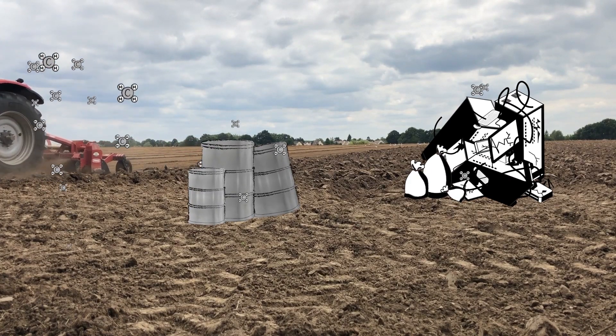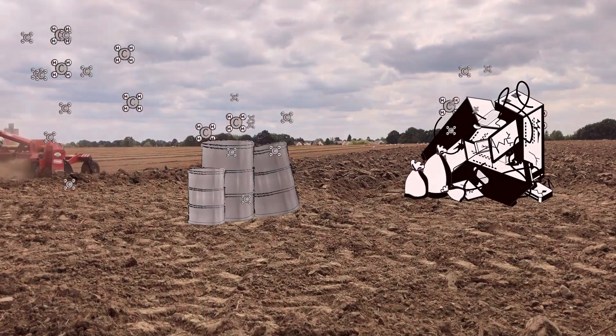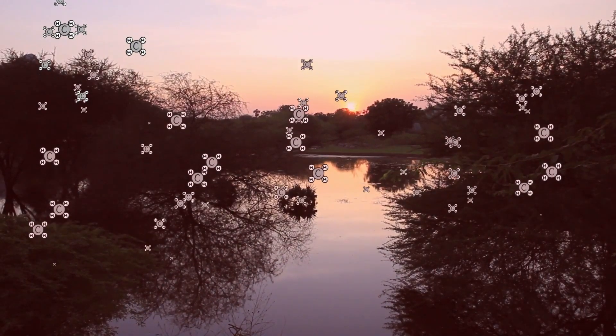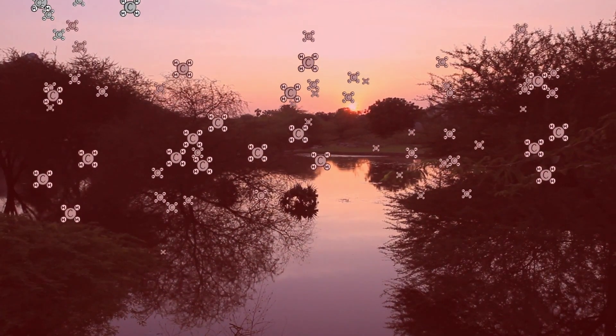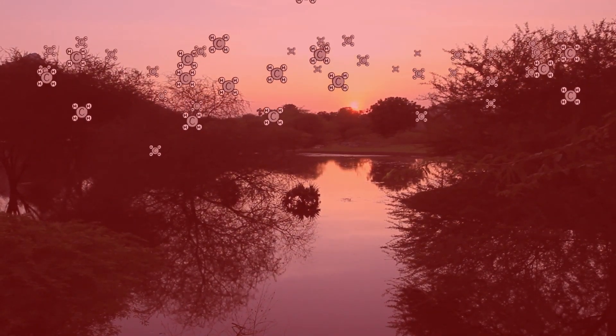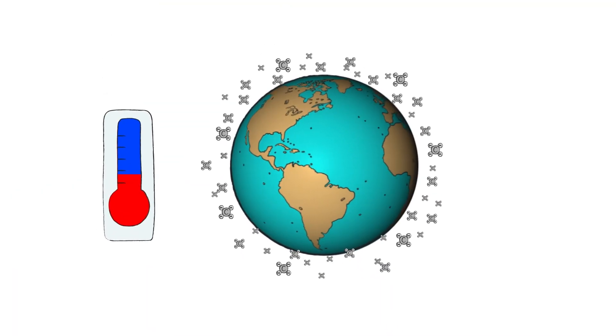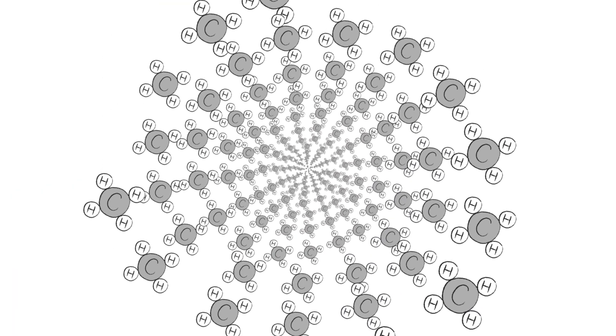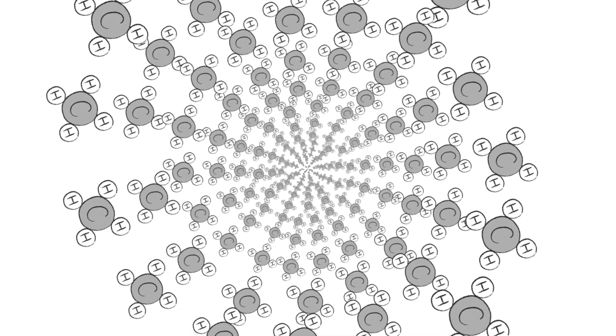Increases in methane's concentration have contributed to climate change, and climate change may alter the methane cycle. Wetlands, for example, may increase, causing further climate change. This is a positive feedback.